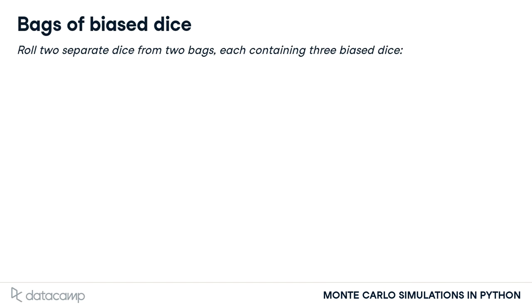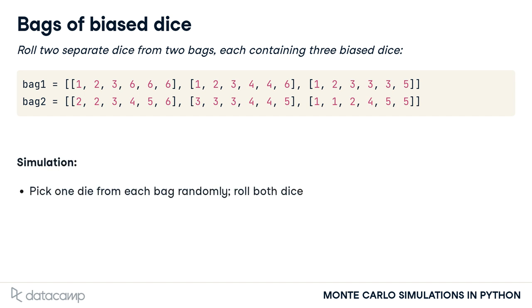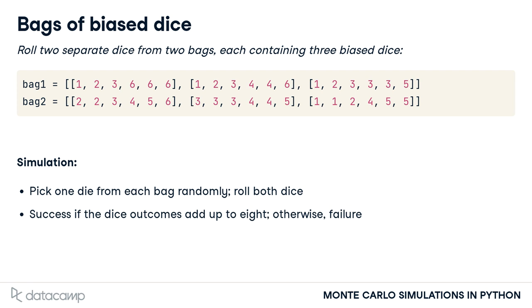Let's look at an example showcasing these benefits. We'll roll two dice chosen from two bags. The bags defined here contain three lists. Each list represents the six sides of a biased die. In this simulation, we pick one die from each bag randomly and roll both dice. If the roll adds up to exactly eight, we have a success; if not, it's a failure.